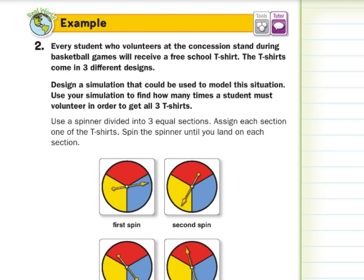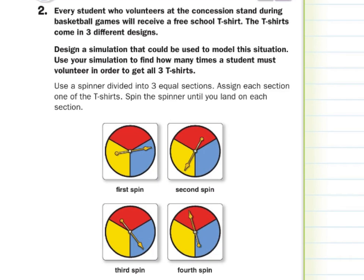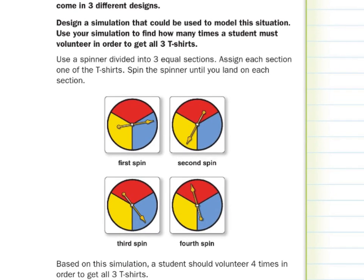For our simulation, we could have a spinner that has three equal sections. Assign each section to one of the T-shirts and spin the spinner until you land on each section. We have the spinner here, and we spun it the first time and got a blue, spun it the second time and got a yellow, spun it the third time and got back to blue. We just need to spin it one more time and it ended up as a red. So based on this simulation, a student should volunteer four times in order to get all three T-shirts.